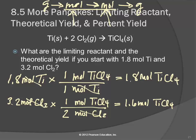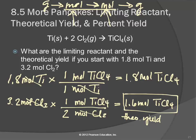Now we have to choose the answers. We look at those two numbers — 1.8 and 1.6 — and 1.6 is smaller. That is the theoretical yield. We go back and see which reactant gave the smaller number: it came from the chlorine. Chlorine is our limiting reactant. Same process as the pancake recipe, but now it's not whole numbers and not things we're familiar with.